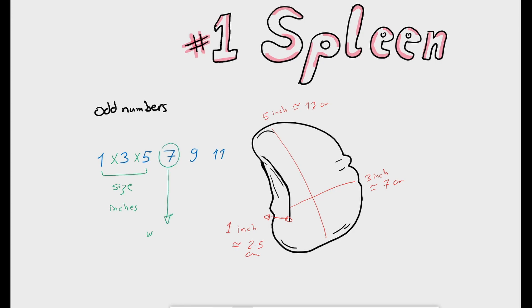7 is the weight of spleen in ounces which equals about 200 grams. 9 to 11 are the numbers of ribs on the left side. These ribs cover the costal or the outer surface of the spleen.